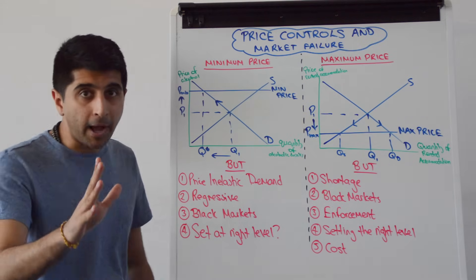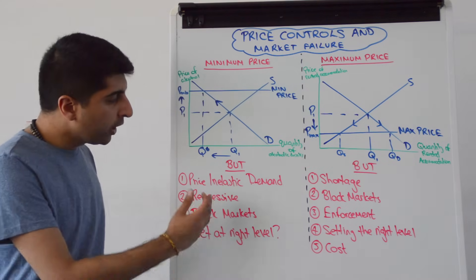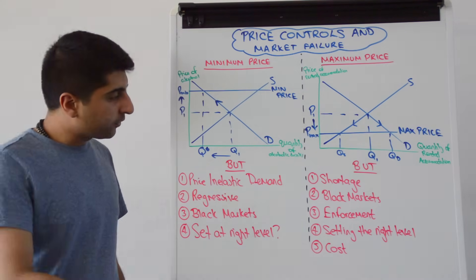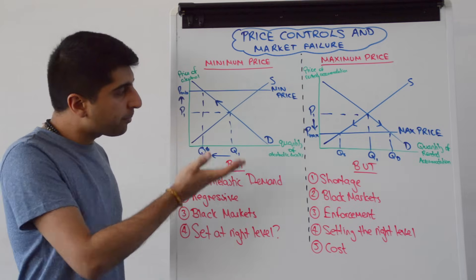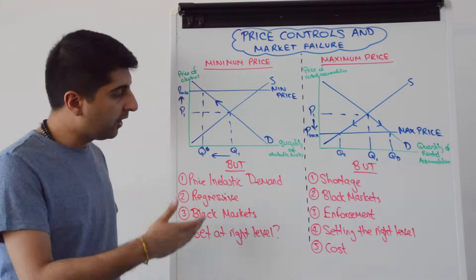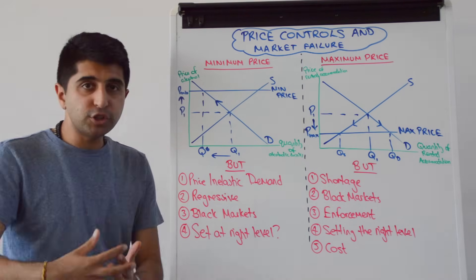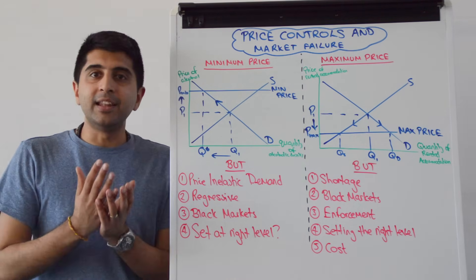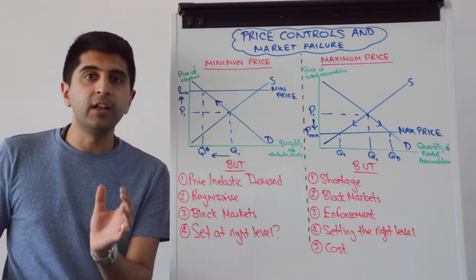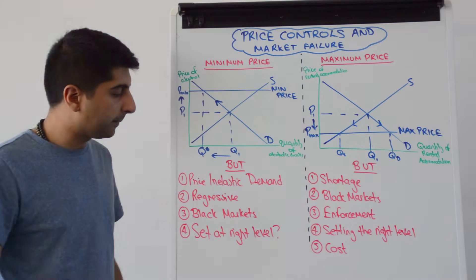There are many issues with imposing this minimum price, especially on alcohol. We can argue there is price inelastic demand: when the price goes up, we're not questioning whether demand will fall — we're questioning how much it will fall. If demand is price inelastic, the fall in quantity demanded will be proportionately less than the increase in price, and therefore we might not see quantity fall enough to fully solve the market failure, stopping here instead of reaching Q*.